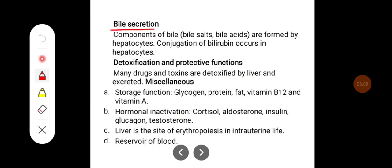Bile secretion: the components of bile, which is the secretion from the liver, mainly contain bile salts and bile acids. These are formed in the hepatocytes. Conjugation of bilirubin also occurs mainly in the hepatocytes.